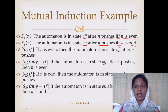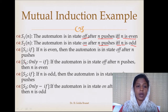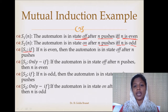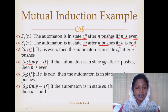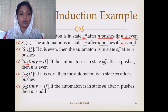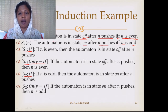Since this is an if-and-only-if statement, we can split it into two parts for proving. The if-part of S1 is: if n is even, then the automaton is in the off state after n pushes. The only-if part of S1 is: the automaton is in the off state after n pushes only if n is even.